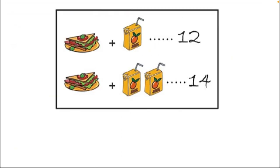I have zoomed in the picture and we will solve this question through visualization — the cutting method. You can also find this in your textbooks. There are two equations: I have cut one burger from both the upper and lower equations, and I have cut one juice packet from the upper and lower equations as well. In the primary mathematics Oxford textbooks, the cutting method is exactly equal to the subtraction method.